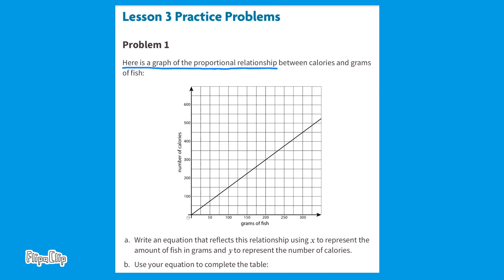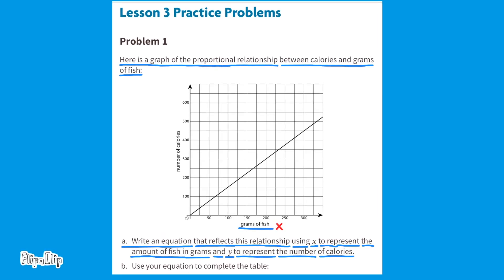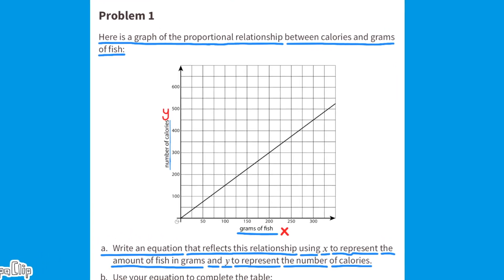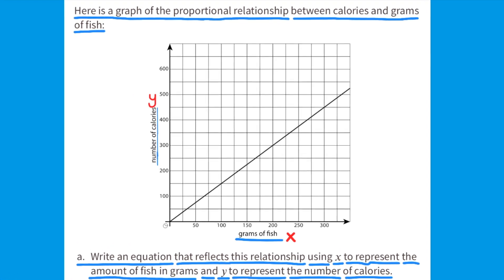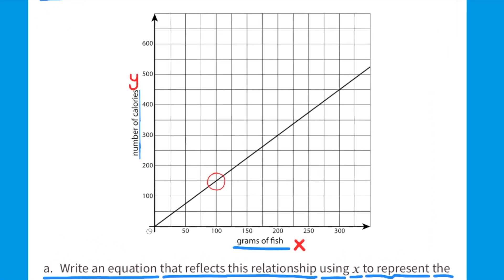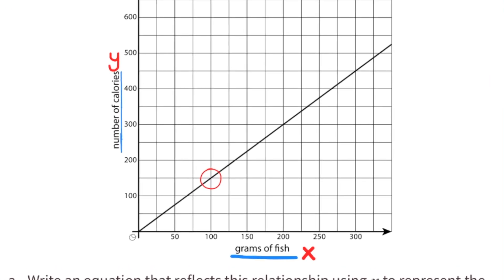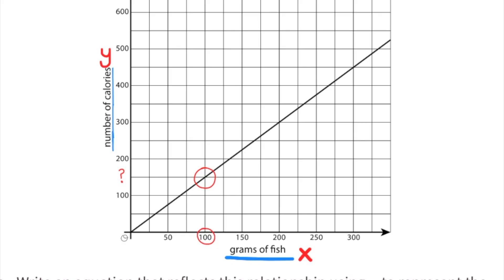Lesson 3 Practice Problems, Number 1. Here is a graph of the proportional relationship between calories and grams of fish. Part A: write an equation that reflects this relationship, using x to represent the amount of fish in grams and y to represent the number of calories. Along the horizontal x-axis is grams of fish, and along the vertical y-axis is number of calories. Take a close look at the circled section along this line — it goes right through the crosshairs, with 100 along the x-axis and 150 along the y-axis.